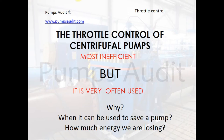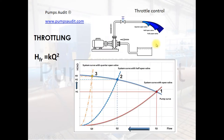Hello, this is the Pump Audit video channel. In this video we are going to talk about the throttle control of centrifugal pumps. Almost all pump users know that throttle control is the most inefficient method of pump control. The presence of throttle control is evidence of inefficient pumping system operation, but it is very often used. Why? When can it be used to save a pump and avoid more serious problems? How much energy is wasted when we apply throttle control? We will try to answer these questions in this video.